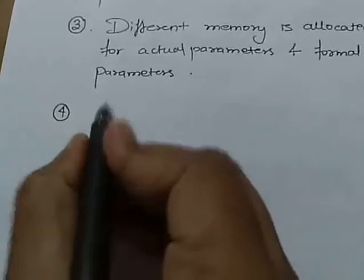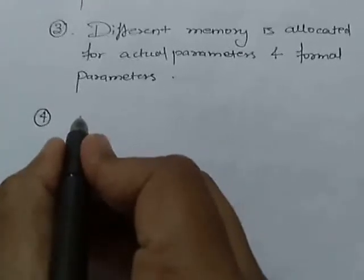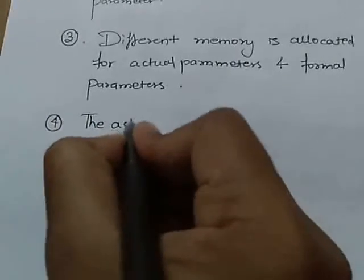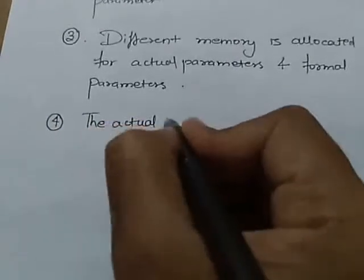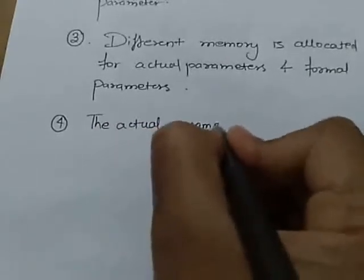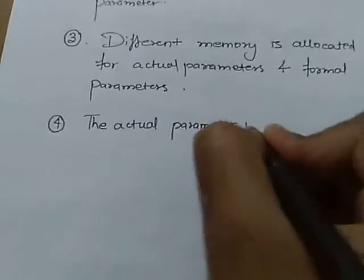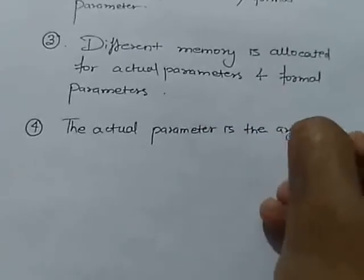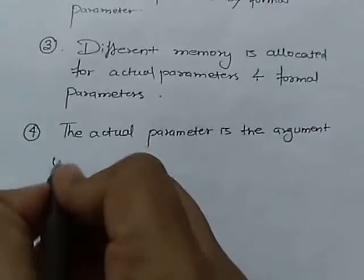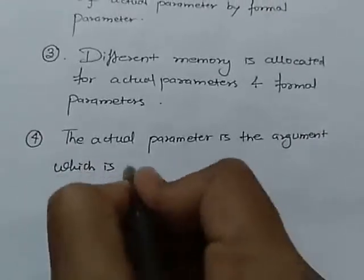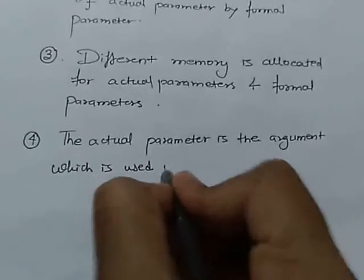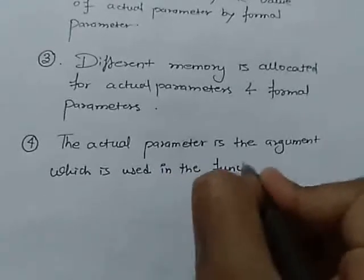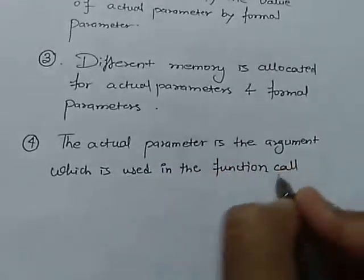In call by value mechanism, the actual parameter is the argument which is used in the function call.